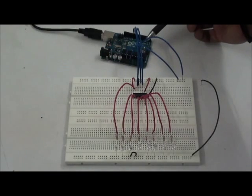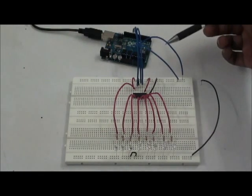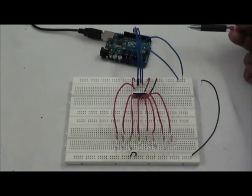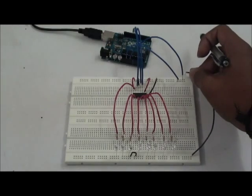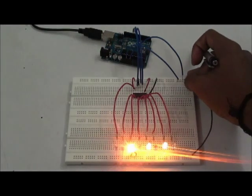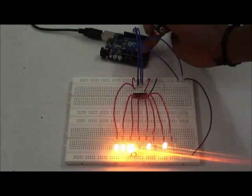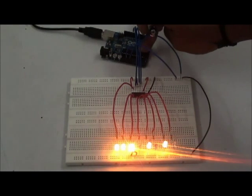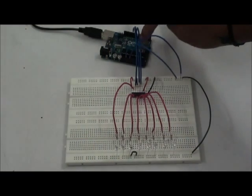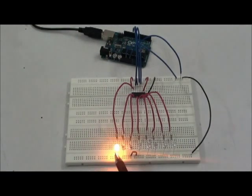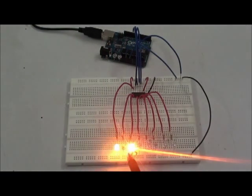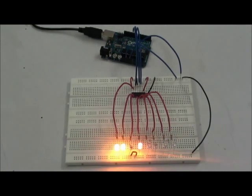I have written code in such a way that it is sending data from 0 to 255. Let's check by providing the supply. Resetting. This is my LSB, 1, 2, 3, 4 and it goes up to 255.